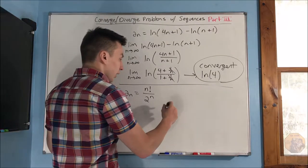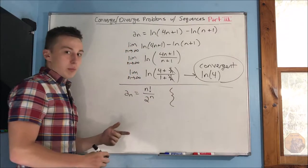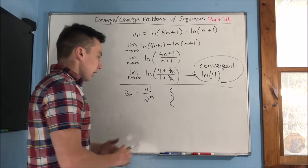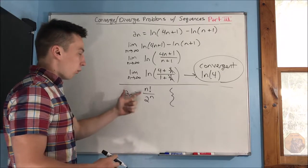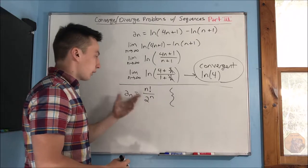Now, we can do that by just writing out a couple terms. Say we want to write out our first term. Well, that's just plugging in 1 for n. And that would just be 1, because 1 factorial is 1.